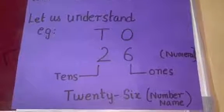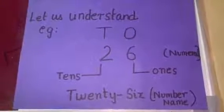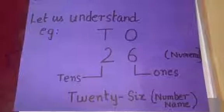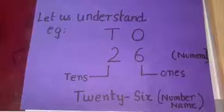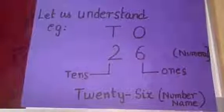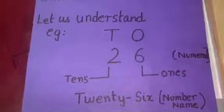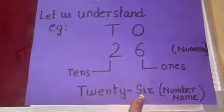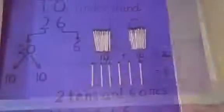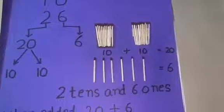Example, in numeral 26, we have 2 tens and 6 ones. The number on the right side is ones place and the number on the left side is tens place. And we write the number name as shown, twenty-six. Now, why 2 tens and 6 ones?